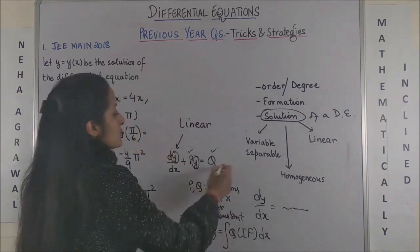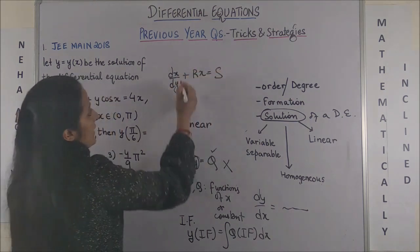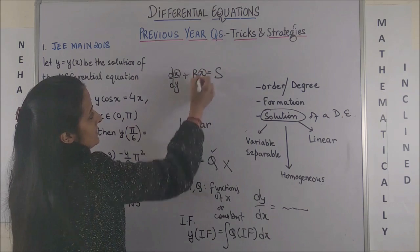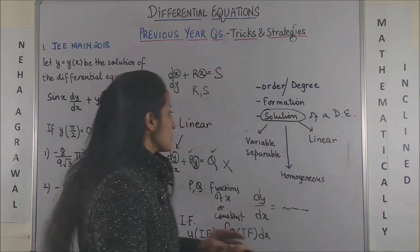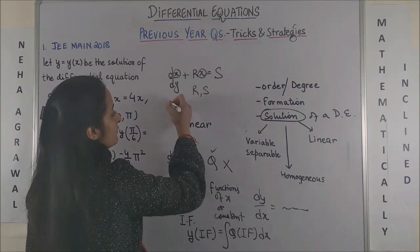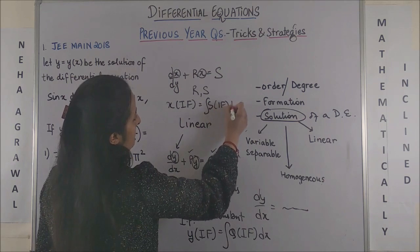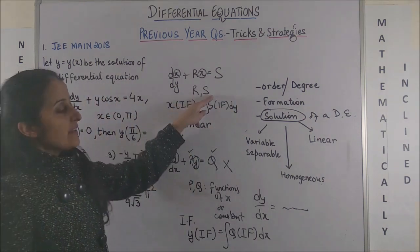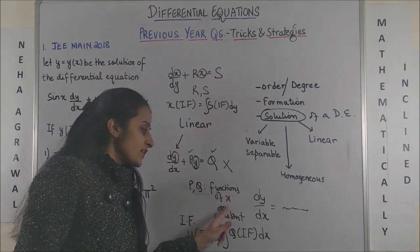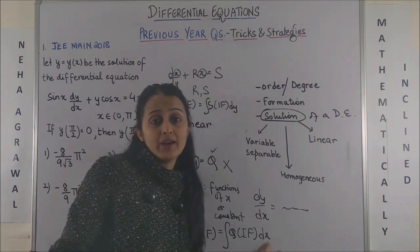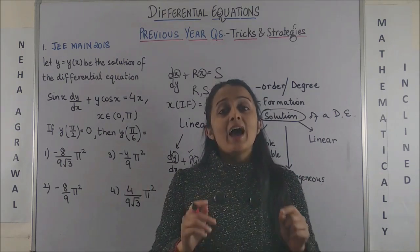In case it is not even this form, the next linear form is dx/dy plus Rx equals S, where R and S are functions of y or constants. Your integrating factor is found the same way, and the final answer follows the same structure but integration is done with respect to dy. Let me know in the comment section below if you want a separate detailed video for linear differential equations. For now, let's roll.